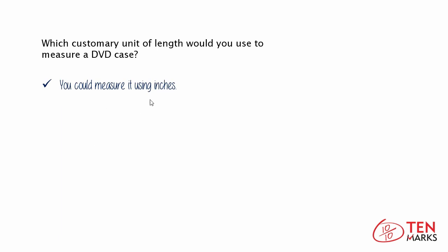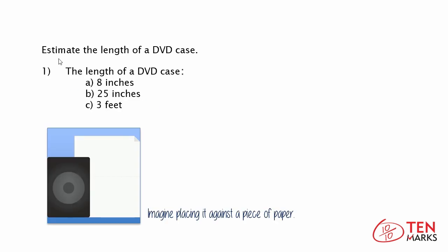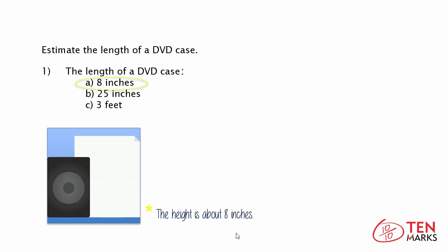Now that you know you would measure it using inches, you need to estimate the length of a DVD case. So you need to choose whether the length of a DVD case is a) 8 inches, b) 25 inches, or c) 3 feet. It will help if you imagine placing it against a piece of paper as you see here. Here's the DVD case and here's your piece of paper. This piece of paper is about 11 inches, so you would estimate that the length of a DVD case is a) 8 inches, as you see here as well.